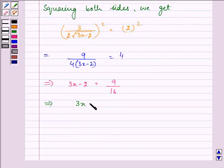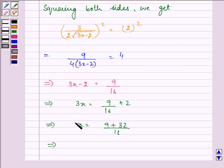That is 3x is equal to 9 upon 16 plus 2. That is 9 plus 16 into 2 gives us 32 upon 16. And we have 3x equal to 41 upon 16.